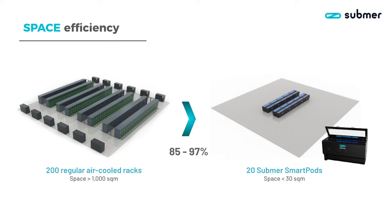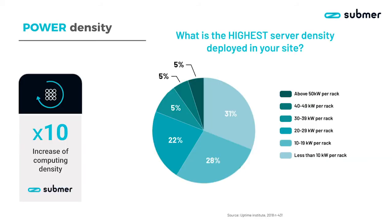If you look at the overall square meters you need to build an immersion cooled data center, you need less space. An air cooled environment compared to an immersion cooled environment has a delta of about a factor of 10. So you need 10 times less space for an immersion cooled environment versus an air cooled environment. It gives you the opportunity to either increase your kilowatts per square meter sold, or decrease your infrastructure cost by utilizing a smaller building for the same amount of compute power.